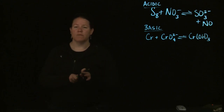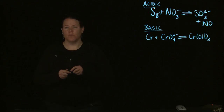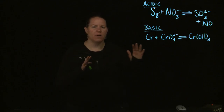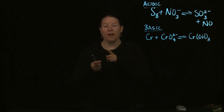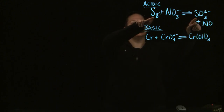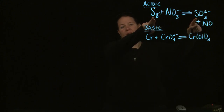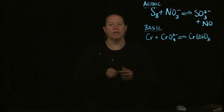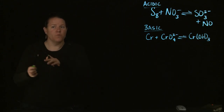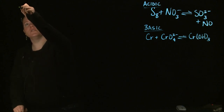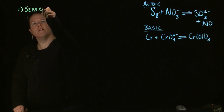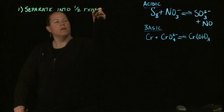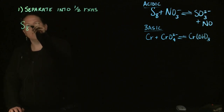First thing is you have to separate out the half reactions. What you're going to do is look for elements that are the same on both sides of the arrow that are not H or O. So for instance here, I have S — that would be what we call our major element here. And then I have N. I have a reactant and a product with N, and a reactant and a product with S. So the S's go with one reaction, the N's go with another. So first thing you're going to do is separate into half reactions based off of the major element.